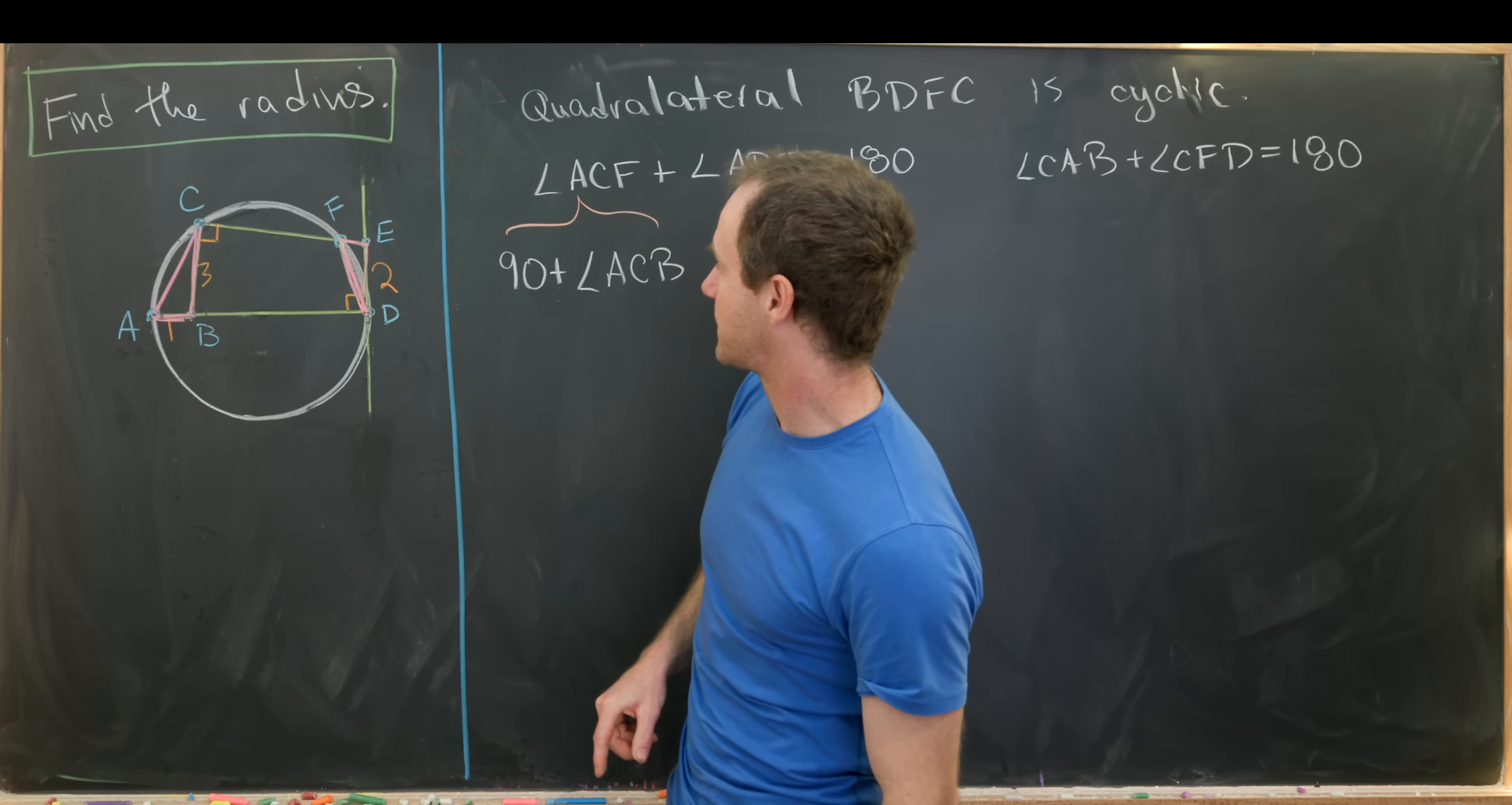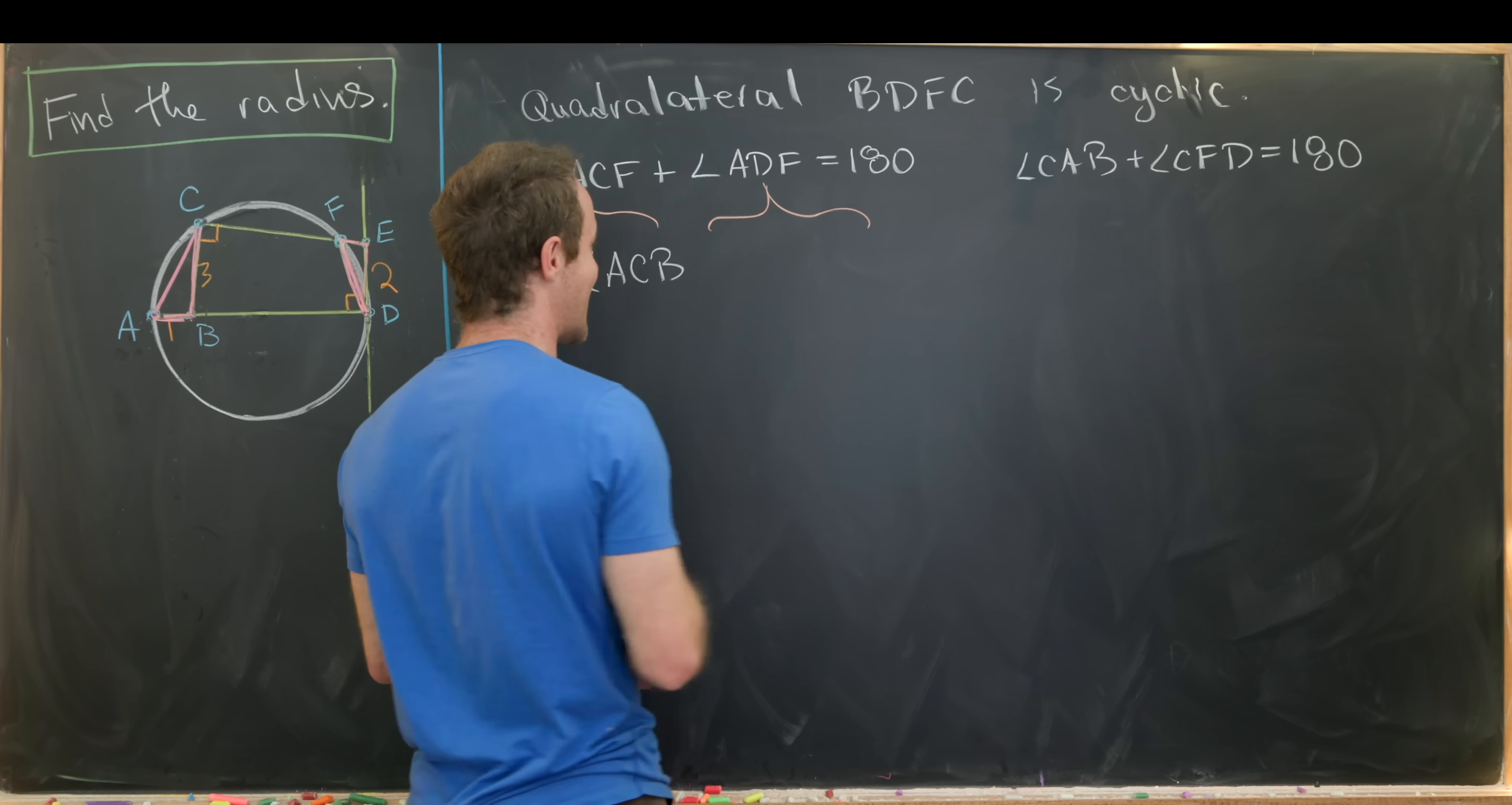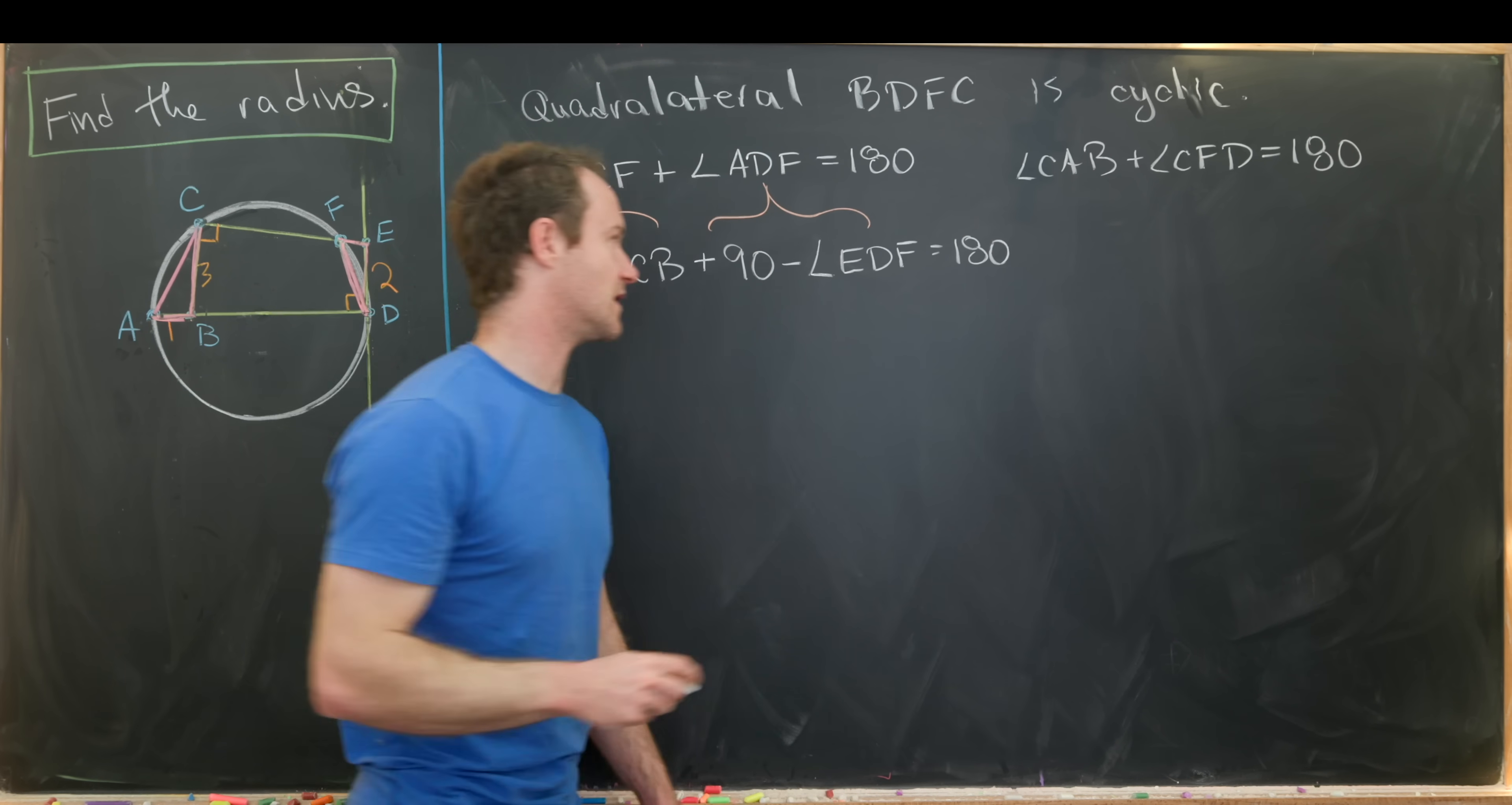So let's maybe start with this angle ACF and we'll decompose it. So let's notice that we can decompose it as 90 plus the angle measurement of ACB. So here we have ACF, but notice ACB is a portion of this angle, and then this right angle is the other portion of that angle. So that explains this sum here. And then we'll do the same kind of thing for ADF.